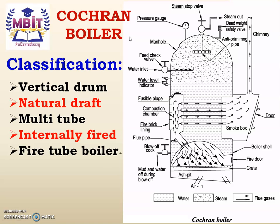Before we study the construction and working of the Cochran boiler, let us study in which category or classification the Cochran boiler is classified. The Cochran boiler is classified as a vertical boiler because it has a vertical drum. It is also a natural draft boiler, as the movement of the hot gases and smoke gases is due to natural draft — that is, the density difference.